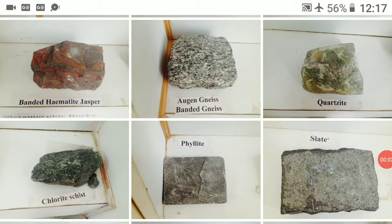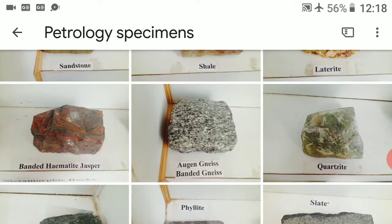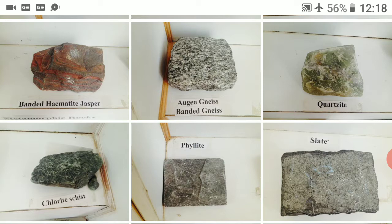In the last video we discussed the introduction of sedimentary rocks. Here I am going to give you an introduction to metamorphic rocks. Examples include quartzite, chlorite schist, phyllite, slate, gneiss, marble, actinolite schist, and tremolite schist. As you know, there are three types of metamorphic rocks: thermal metamorphic rock, dynamic metamorphic rock, and dynamo-thermal metamorphic rock.